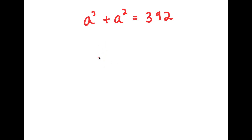In this problem, I have a to the power of 3 plus a squared is equal to 392. So I obviously want to find the value of a here.